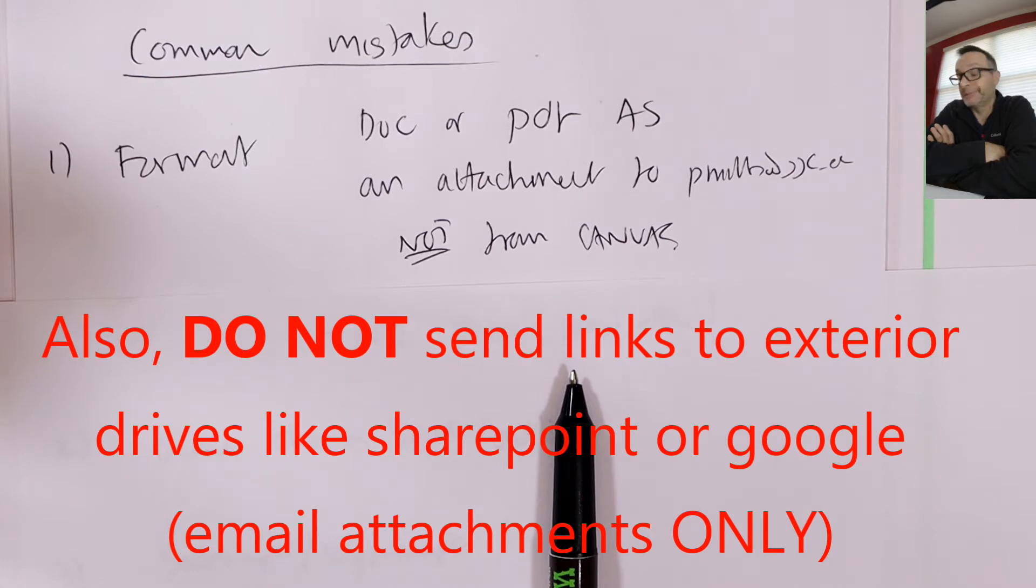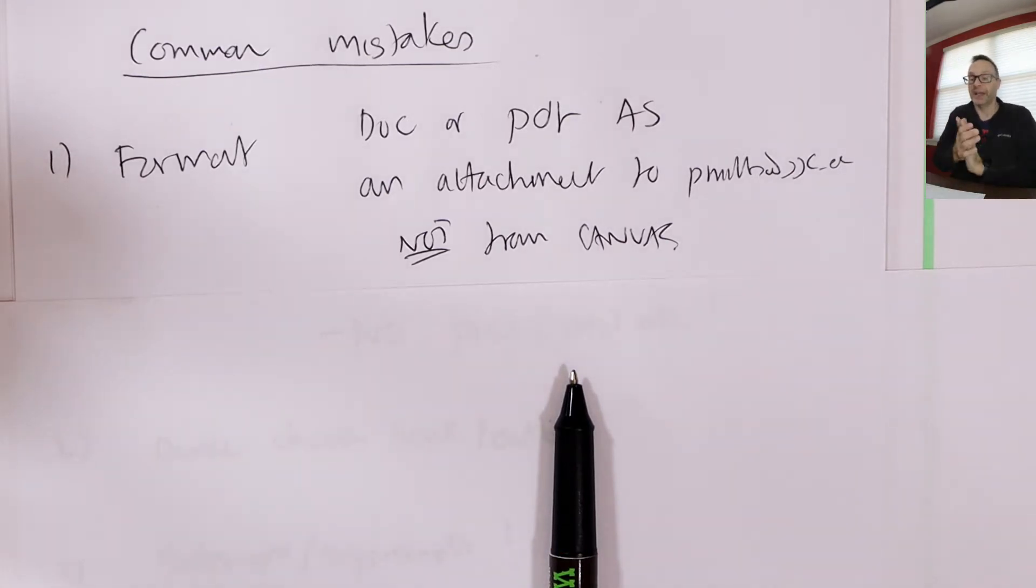And that's a good rule of thumb for most things because Canvas, although good for some things, is not good for email. So send me your doc or PDF as an attachment to my school address from any email you like, but not through Canvas. Obviously before the deadline. Okay, so that's that. And don't send me pictures. I won't grade a picture of a piece of paper. It has to be a doc or a PDF.